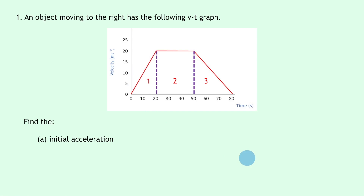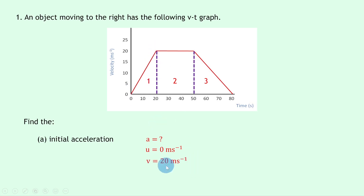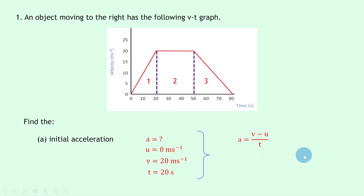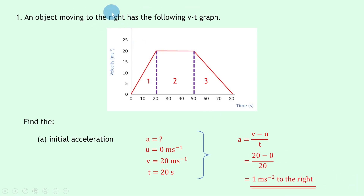For shape number one — the initial uniform acceleration — I'm going to use the acceleration equation and pick out values from the graph. We're finding acceleration a. Initial velocity u is 0 m/s, final velocity v is 20 m/s, and the time is 20 seconds. So a = (v − u) / t = (20 − 0) / 20 = 1 m/s² to the right.